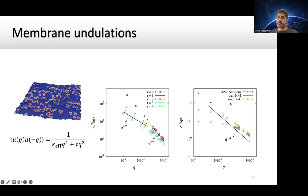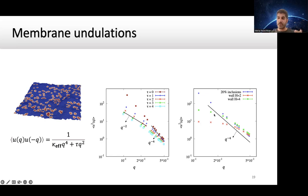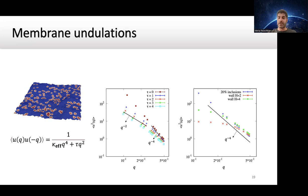If you sandwich the membrane between two walls, the large wavelengths or small wave vectors - those fluctuations will be suppressed, so you don't have that anymore. But at short wavelengths it follows the same theory again. Theoretically it's very hard to model a confined membrane and obtain this fluctuation, but with this software you can do it.